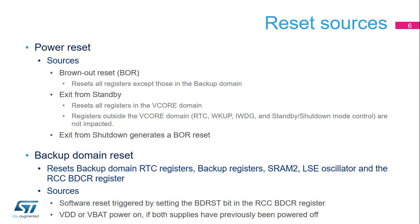When exiting shutdown mode, a brownout reset is generated. The third type of reset is the backup domain reset, which resets the RTC registers, the backup registers, the SRAM2, the LSE oscillator, and the RCC backup domain control register. This reset occurs when the BDRST bit is set in the RCC backup domain control register. It also occurs when VDD and VBAT are powered on if both supplies have previously been powered off.